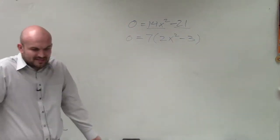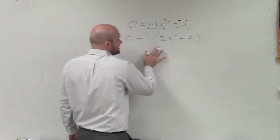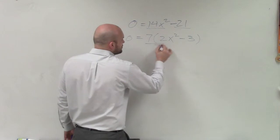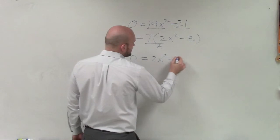Now, you might be saying, OK, well, then what do I do with the 7? Well, it's 7 times this, right? If I was going to undo multiplying by 7, I can divide by 7 on both sides. Therefore, I have 0 = 2x² - 3.